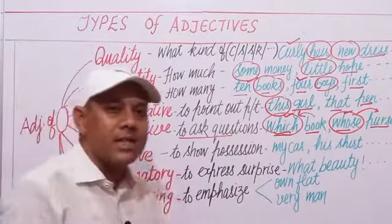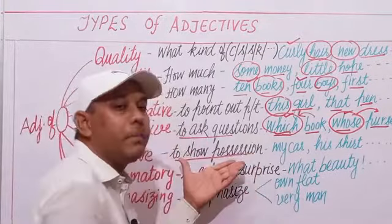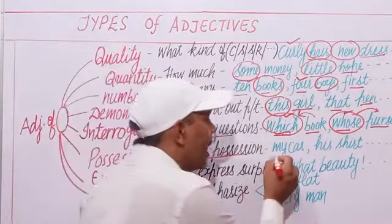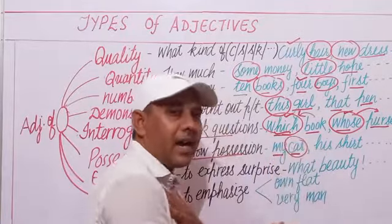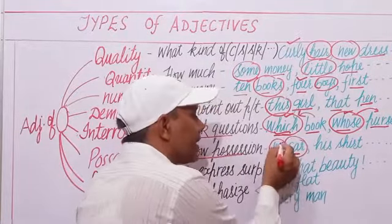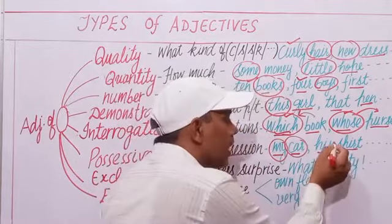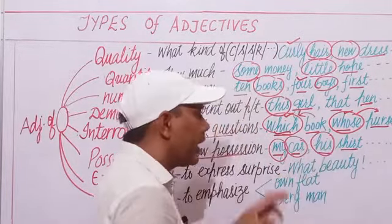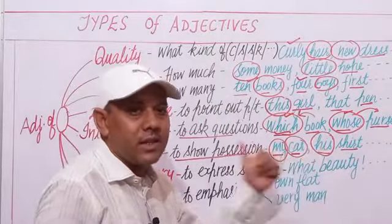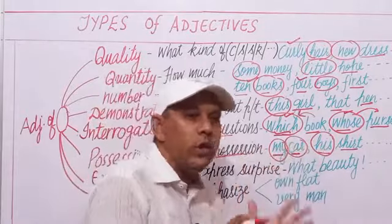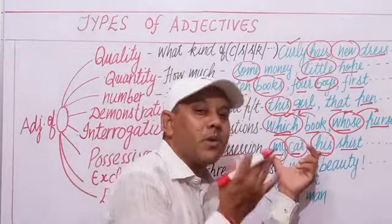Possessive adjectives are used to show possession or belongingness. For example, 'my car' — 'my' is the possessive adjective; 'his shirt' — 'his' is the possessive adjective. 'My' and 'his' are known as possessive adjectives. They are also called pronomial adjectives because they are made from pronouns.